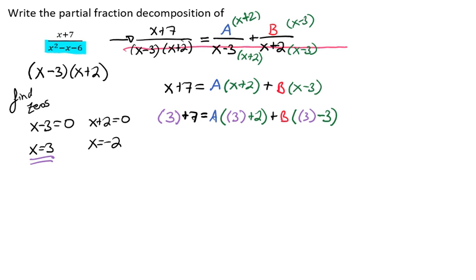And now we're going to simplify what we have. So we have 10 equals 5a plus b times 0. Now b times 0 is just going to be a 0. So really we just have 10 equals 5a.